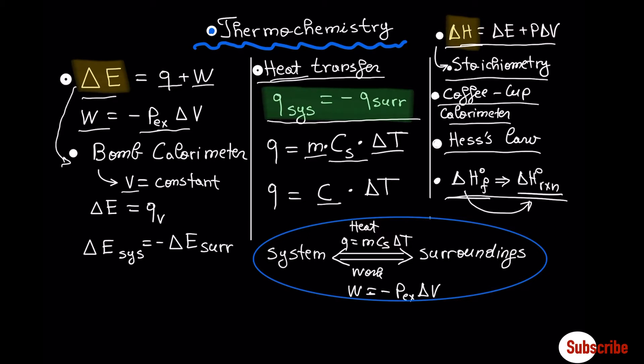We will also use standard enthalpy of formation to find the standard enthalpy change for a reaction. In thermochemistry, there are two critical components: system and surrounding. They always interact with each other in the form of heat and work. Internal energy and change in enthalpy are state functions, which means they depend only on the initial and final states, not on the pathway.